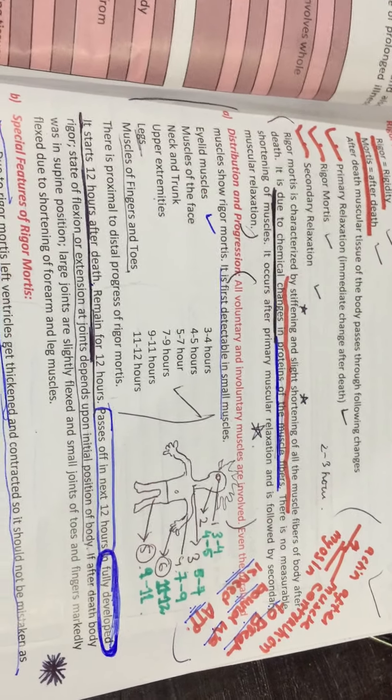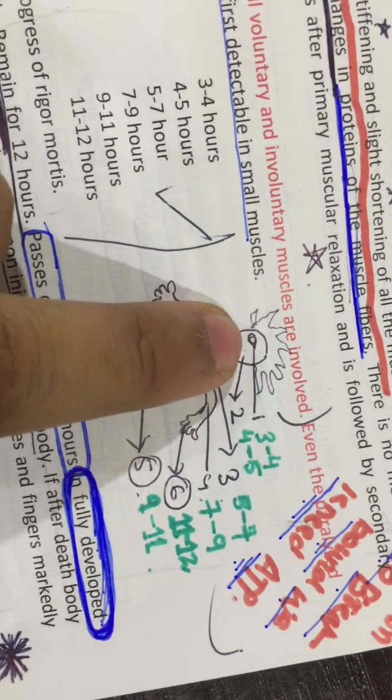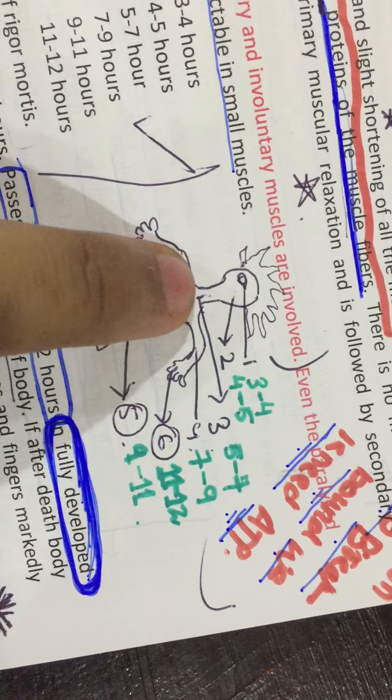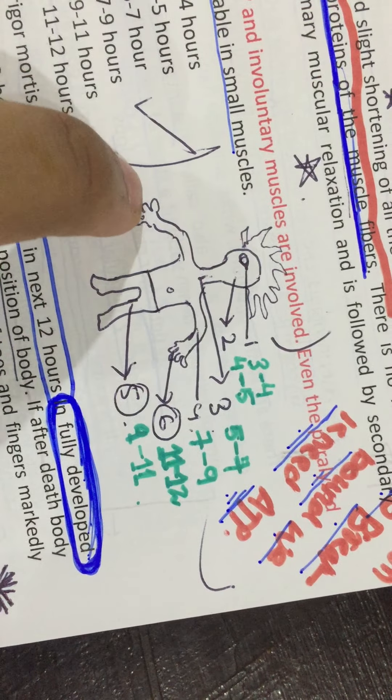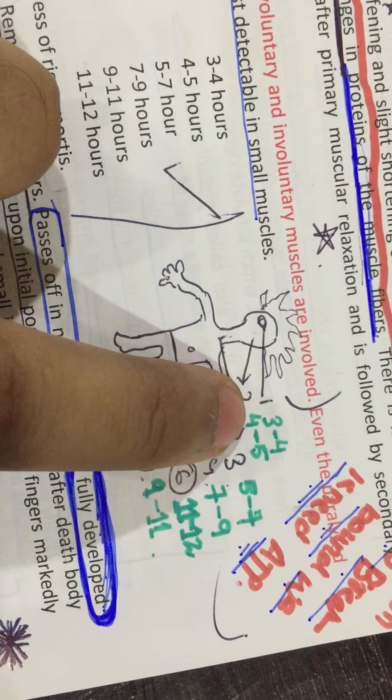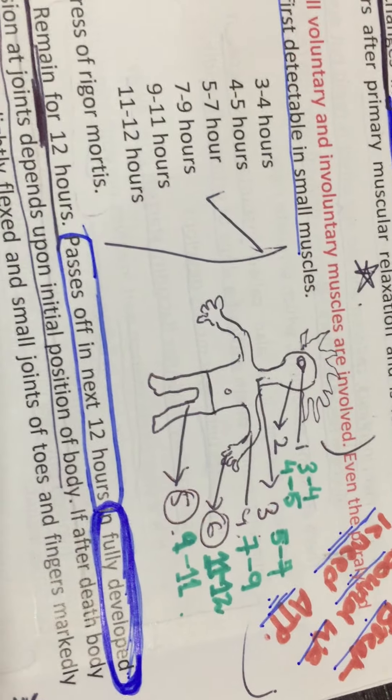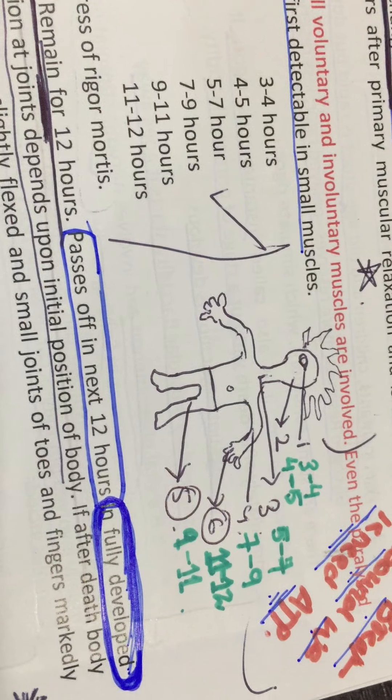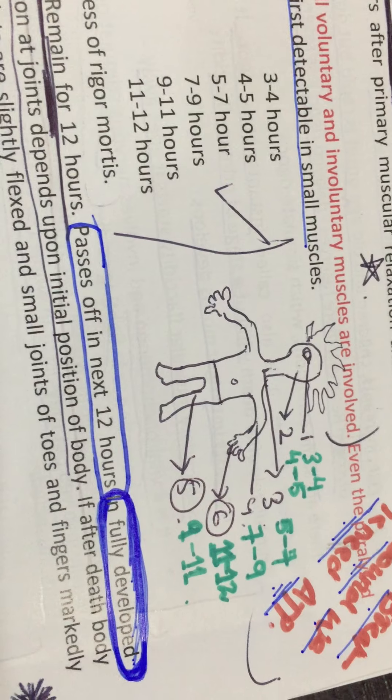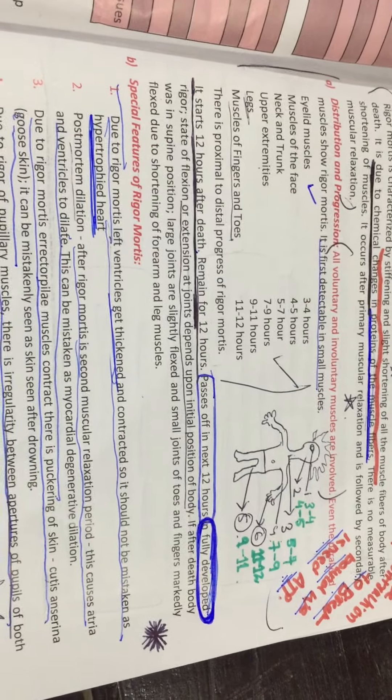Rigor mortis is going to be starting from some organs, then all over the body distributed. First, let's look at the eyes, face, neck and trunk, upper limb, lower limb, and fingers of hand and toes. The rigor mortis starts at eyes 3 to 4 hours, face is 4 to 5, neck and trunk is 5 to 7, upper limb is 7 to 9, lower limb is 9 to 11, and fingers or toes are 11 to 12 hours. This time indicates when rigor starts.